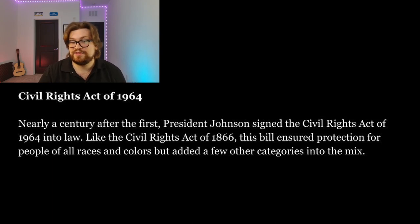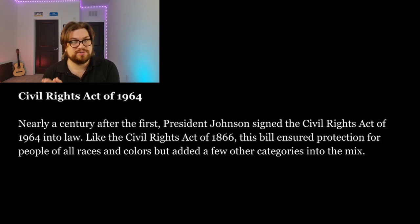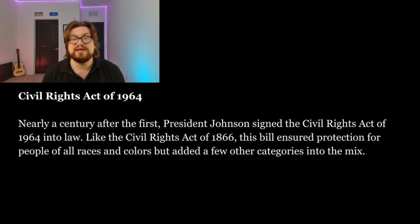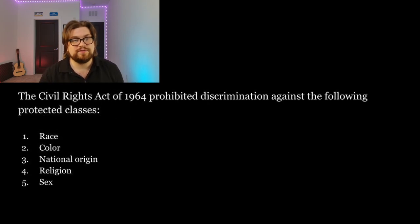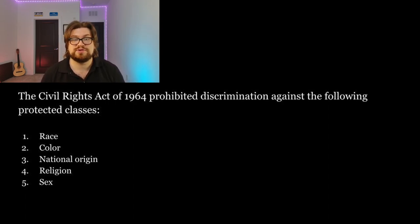Nearly a century after the first, President Johnson signed the Civil Rights Act of 1964. Like the Civil Rights Act of 1866, the bill ensured protection for people of all races and colors, but added a few other categories into the mix, creating something called a protected class. The Civil Rights Act of 1964 prohibited discrimination against the following protected classes: race, color, national origin, religion, and sex. This was a good start, but some improvements were still needed.